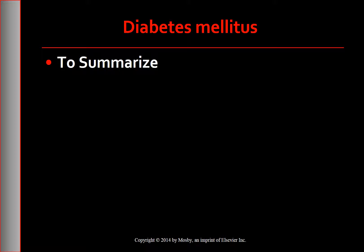Anti-diabetics — insulin and oral hypoglycemic agents — are used in managing diabetes. Self-management of glucose is an important aspect in containing diabetes and preventing its complications. Nursing management of diabetes includes, for the patient receiving insulin: proper administration, assessment of the patient's response to insulin therapy, and teaching the patient regarding administration, adjustment, and side effects of insulin — particularly recognition and management of hypoglycemia using the teach-back method. Proper administration and assessment of the patient's use of and response to oral and non-insulin injectable agents, as well as teaching the patient and family about these drugs, are all part of the nurse's function.